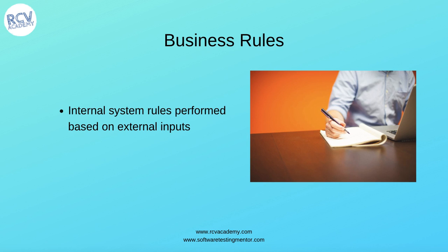The next thing is business rules — what internal system rules are performed based on external input. For example, when you provide inputs from the UI and submit, what rules are happening in the background and what response is presented to the user? These business rules need to be defined in the user story, because end users are not aware of all the business rules happening in the background.